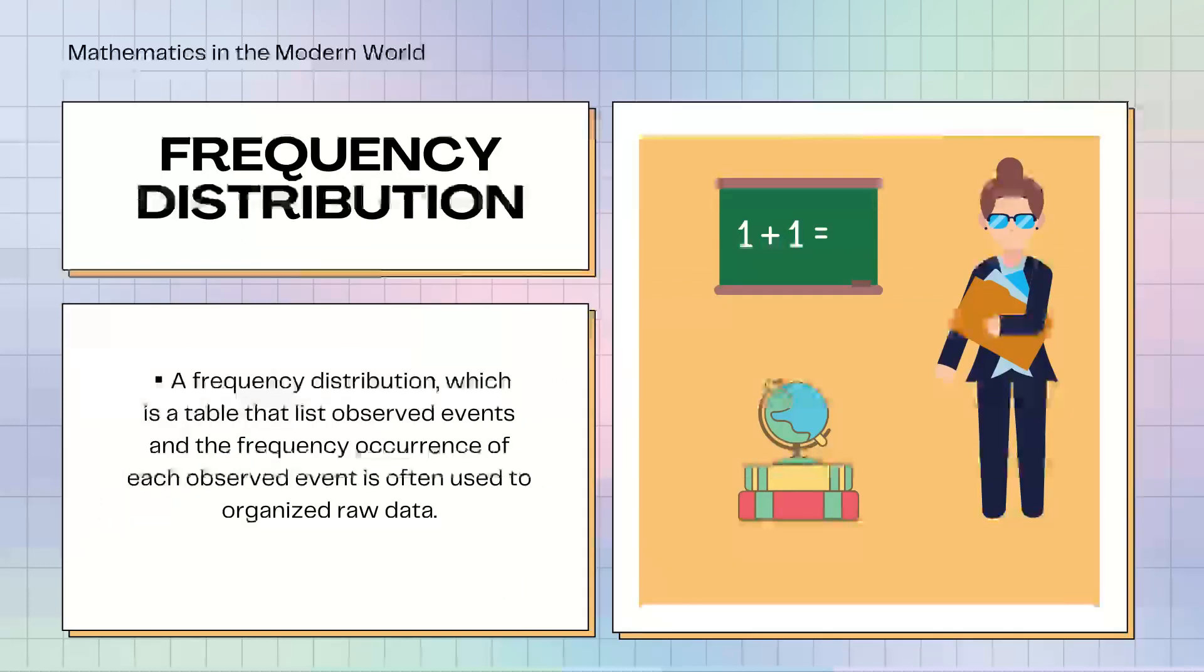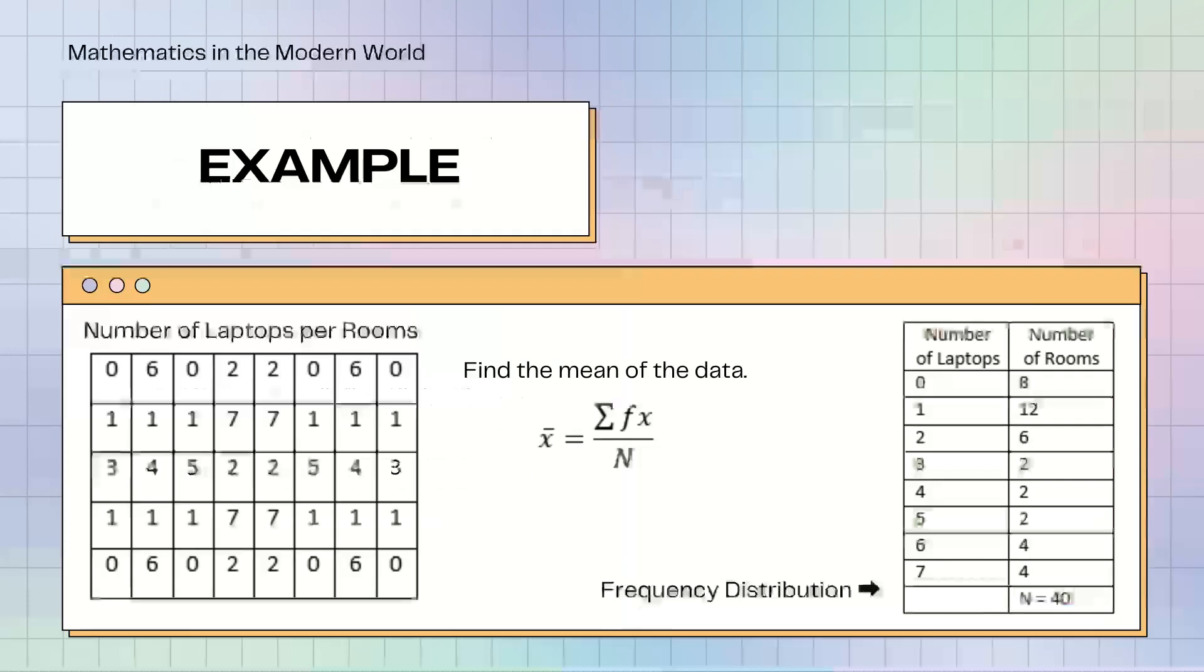Frequency Distribution. A frequency distribution, which is a table that lists observed events and the frequency occurrence of each observed event, is often used to organize raw data. Pwede natin gamitin ang frequency distribution pag sobrang dami na nung given na dataset, like nasa 50 plus or more.